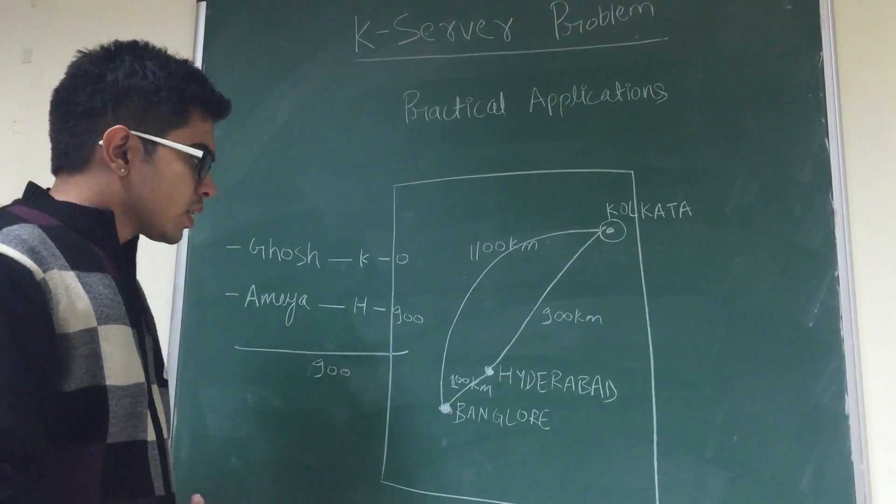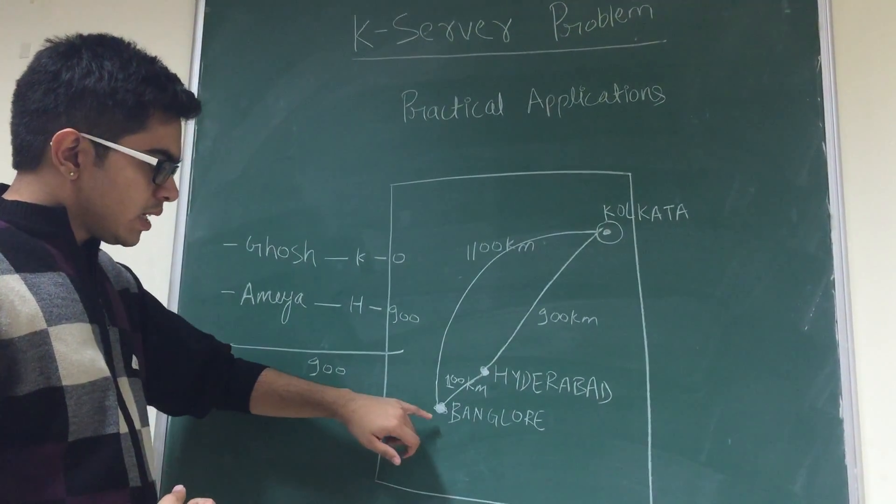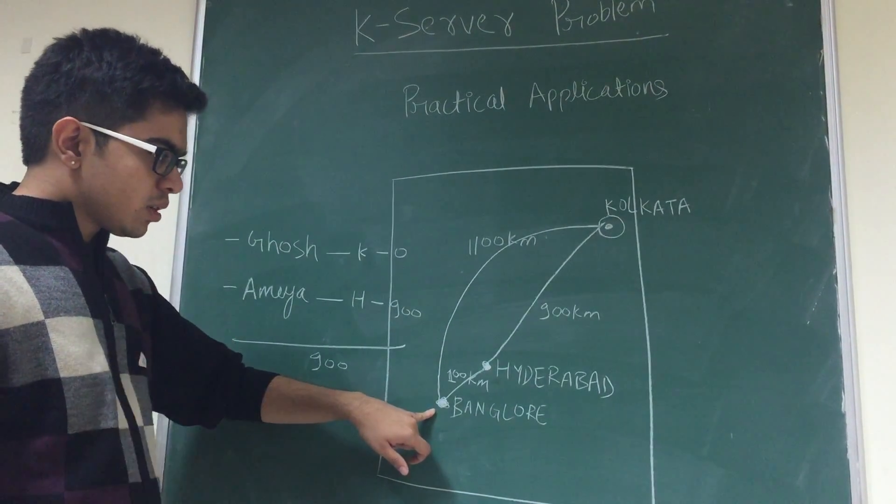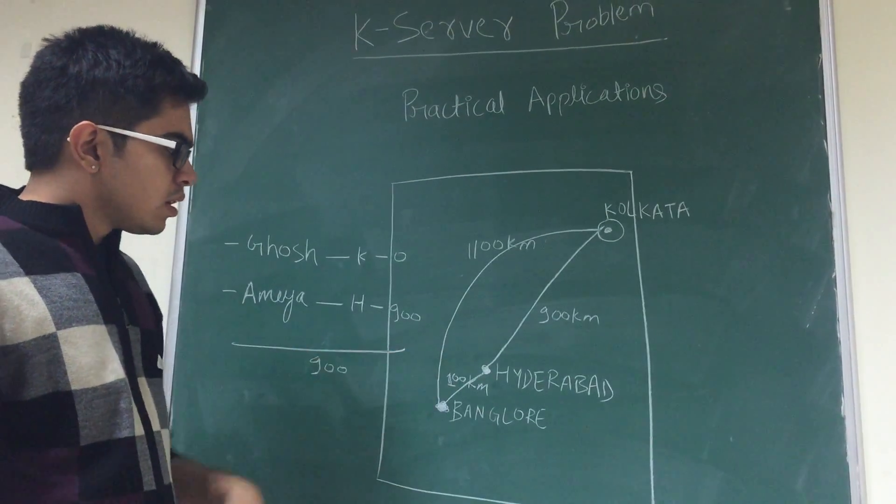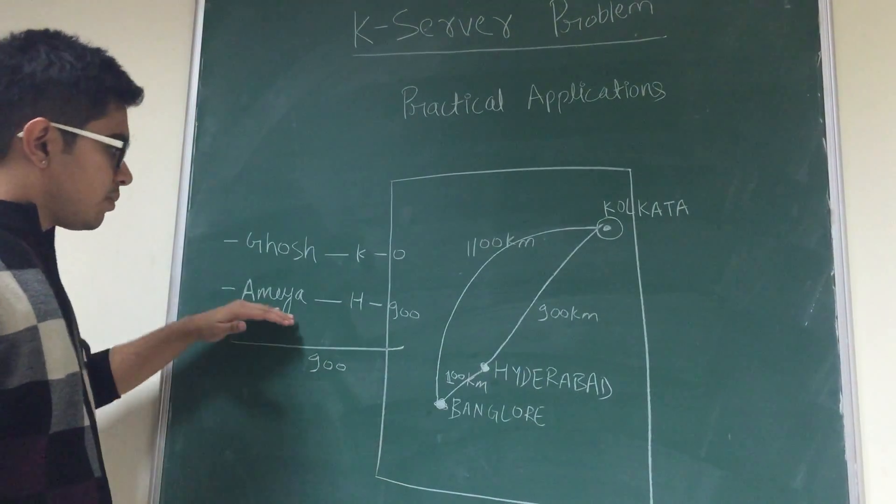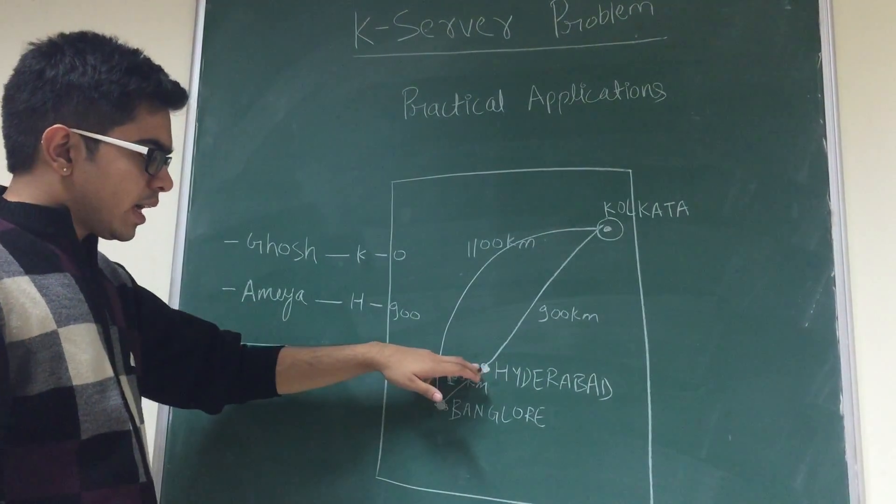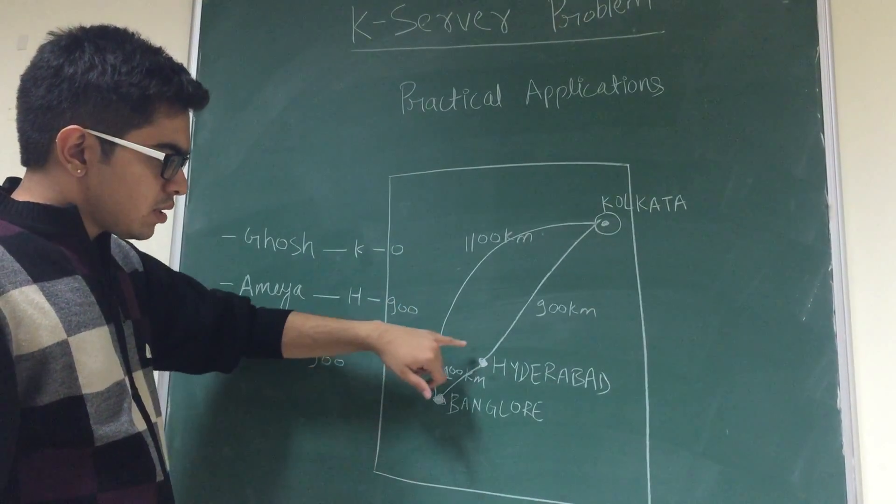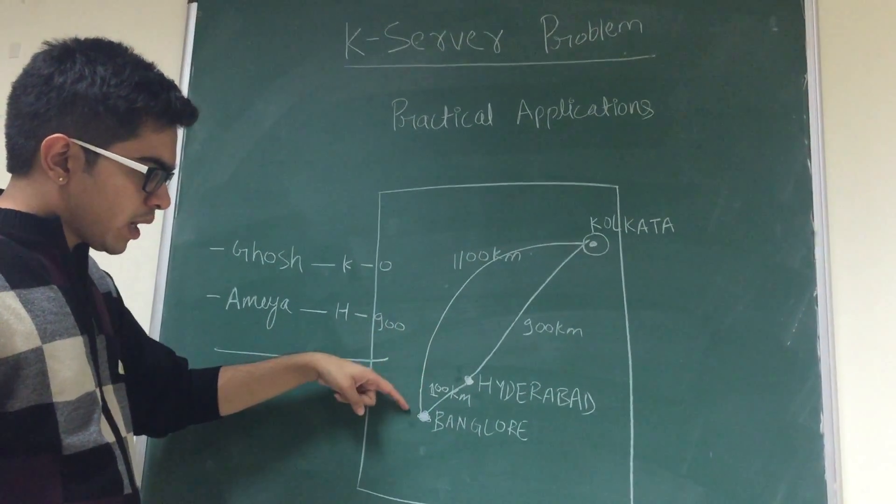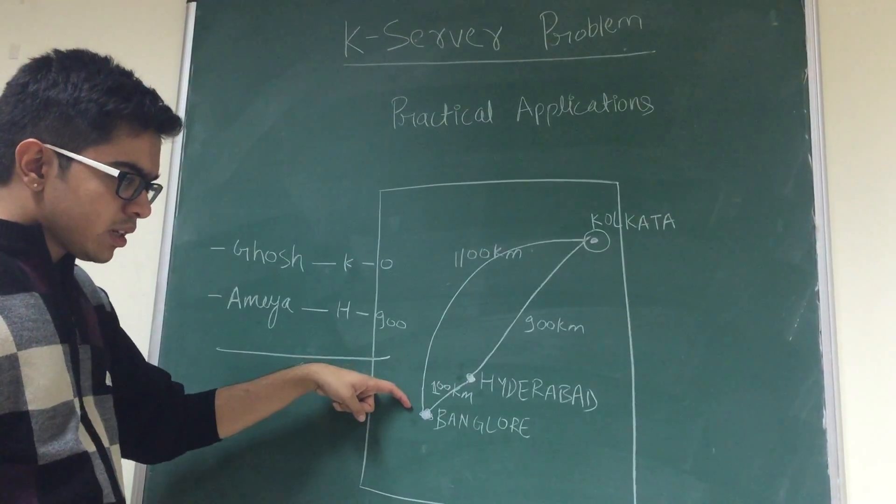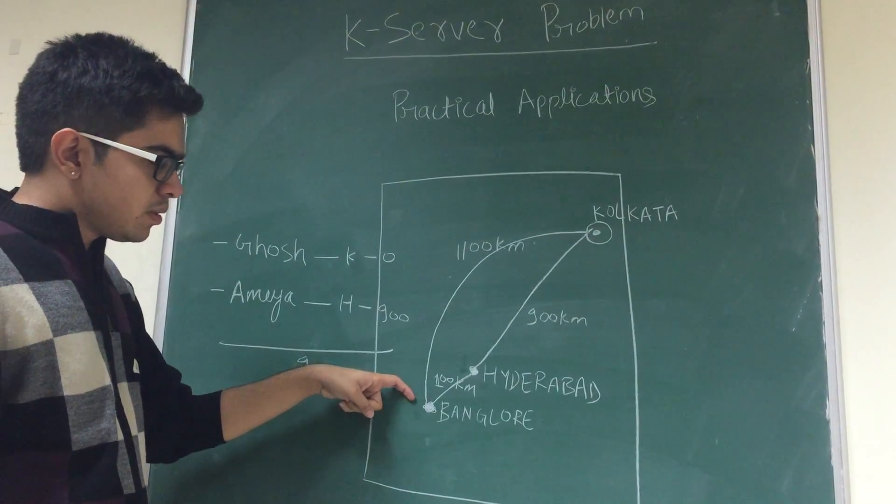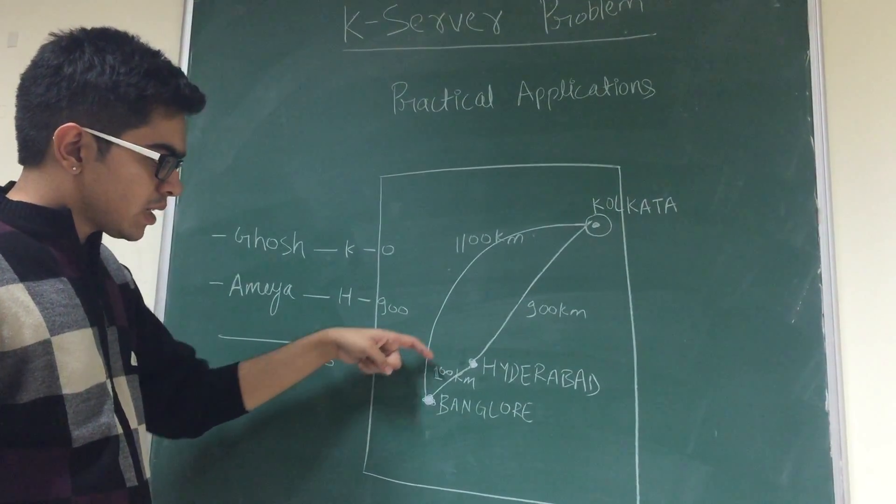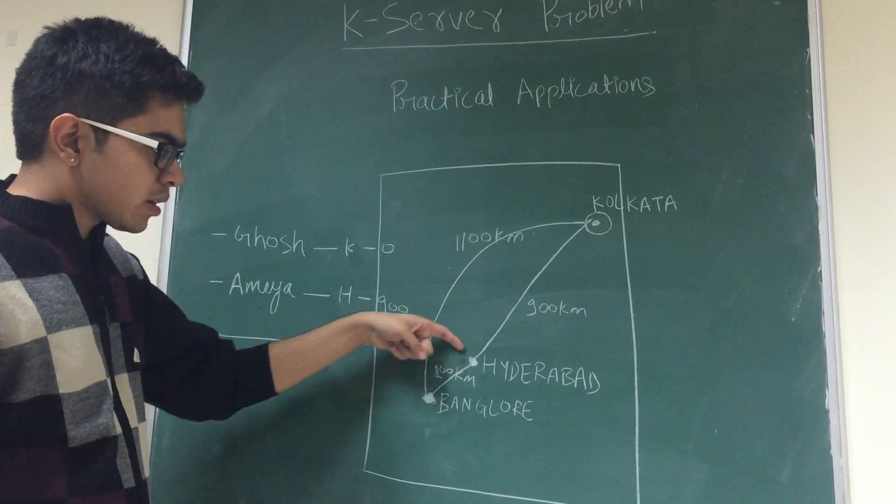Let us take a contradictory example. Let's say I'm getting a request each day in Bangalore and I'm getting another request each day in Hyderabad. So let's say I'm sending Amya to Hyderabad and then since next request arrives in Bangalore, since Amya is the closest server, he'll be moved to Bangalore and then another request, the third request will be in Hyderabad. So Amya will keep on travelling between Hyderabad and Bangalore.